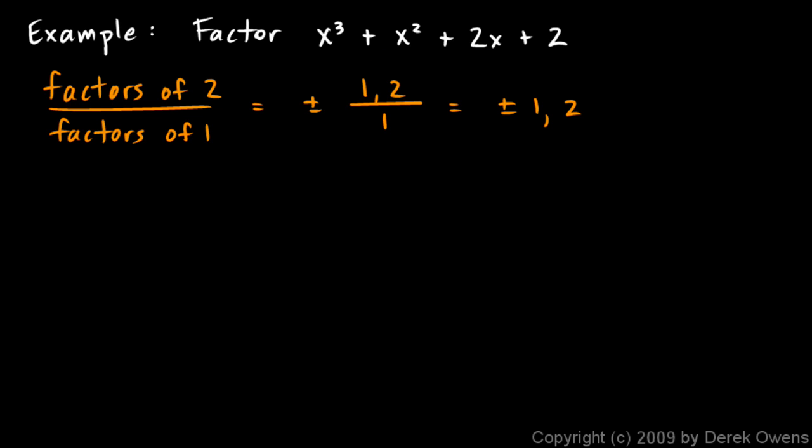So let's try them and see what we get. We'll start with 1, and this is pretty easy. These numbers are easy: 1, 1, 2, and 2. And I'll go through the synthetic division here kind of fast. 1 times 1 is 1, we add and we get 2. 2 times 1 is 2, and we add and we get 4. 4 times 1 is 4, and we add and we get 6. So that didn't work.